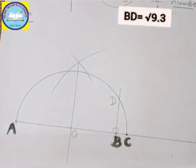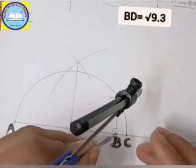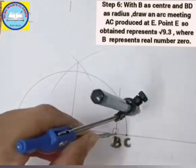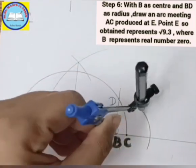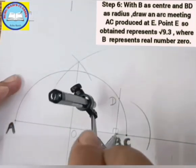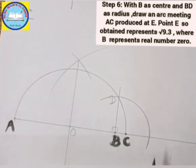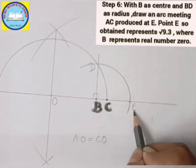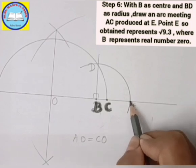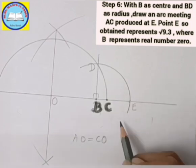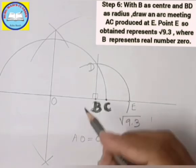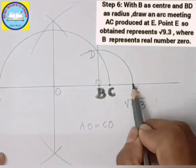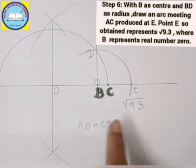BD is root 9.3, but we need to draw it on the number line. Put the compass pointer on B, take BD as the radius, and draw one arc. The arc intersects the number line, and that intersection point is your root 9.3 — because the radius equals BD length, which is root 9.3. Thank you.